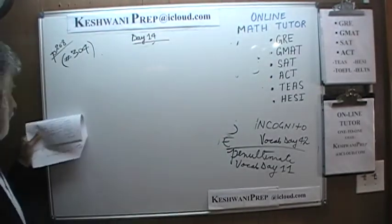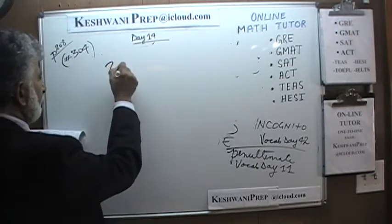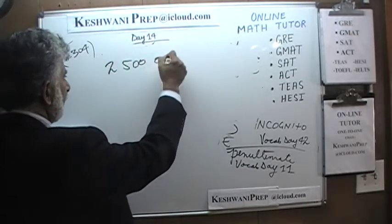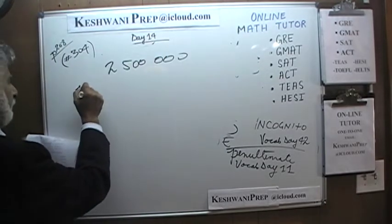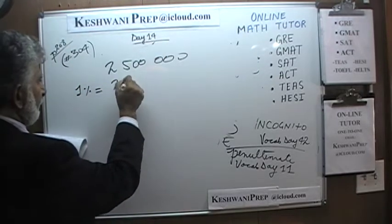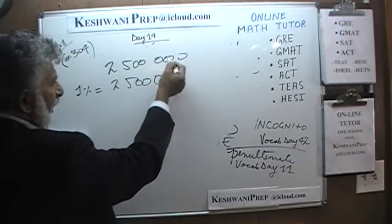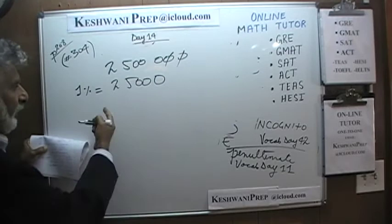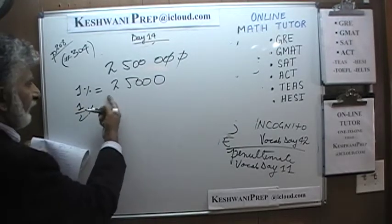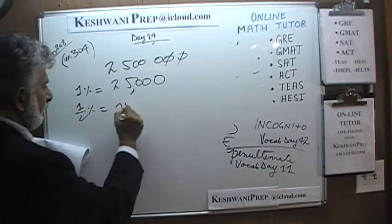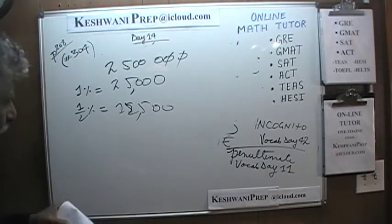Alternatively, we can find half a percent of $2.5 million. One percent of 2.5 million is 25,000, so half a percent is 12,500 — just like we found a second ago.